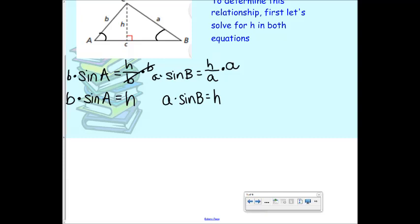If b times sine A and a times sine B are both equal to h, then they must be equal to each other. It's like if I am the same height as Jesse, and Jesse is the same height as Alda — then Alda and I are also the same height. So: b times sine A is equal to a times sine B.